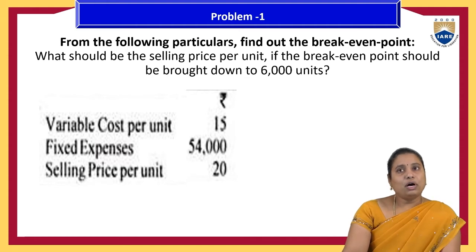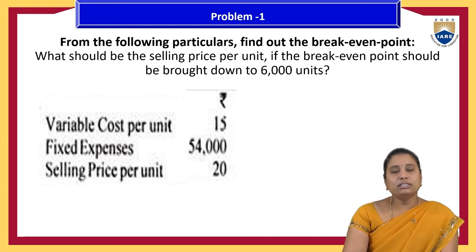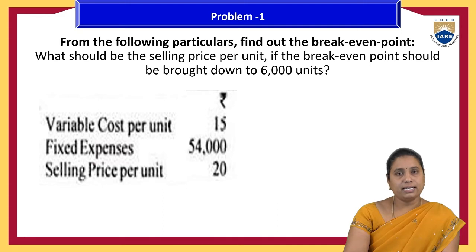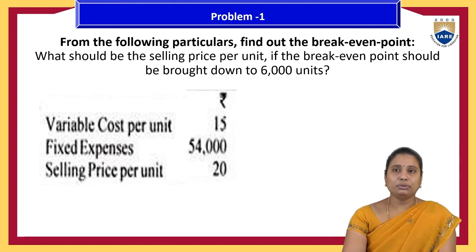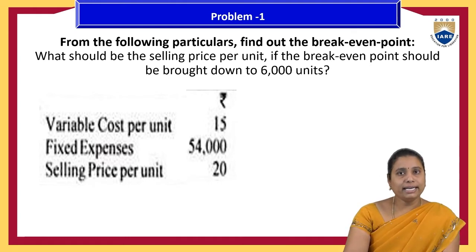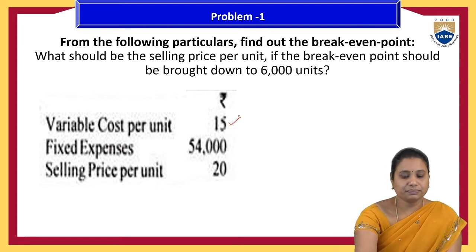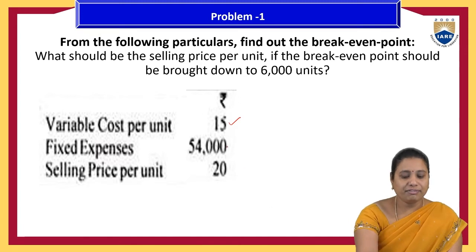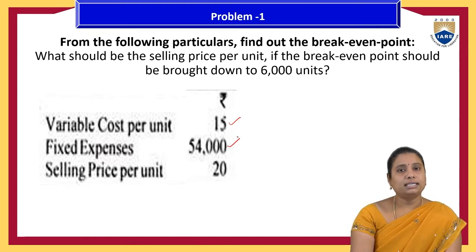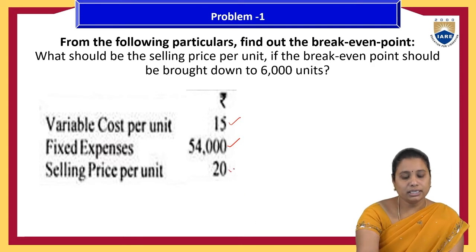From the following particulars, find out the break-even point, and what should be the selling price per unit if the break-even point should be brought down to 6,000 units. The given data: variable cost per unit is ₹15, total fixed expenses are ₹54,000, and selling price per unit is ₹20.